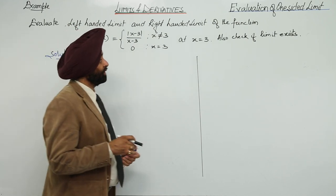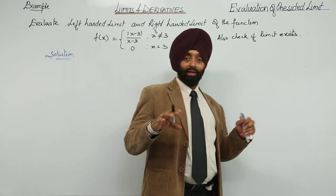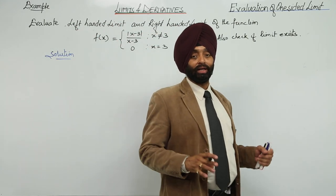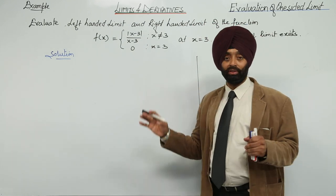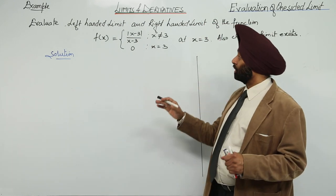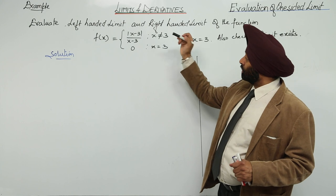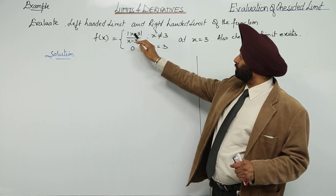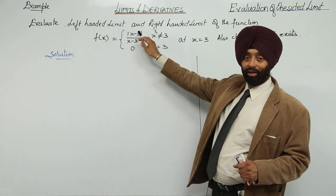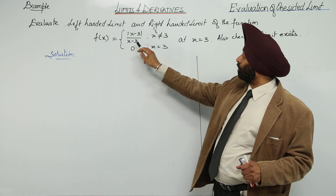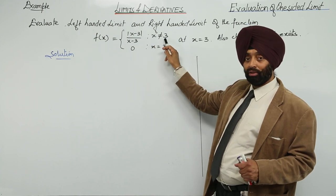For evaluating the one-sided limit — left-hand limit and right-hand limit — this example is very interesting. We have given f(x) equal to the modulus function, that is |x minus 3| upon (x minus 3), where x is not equal to 3.